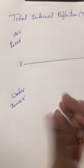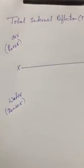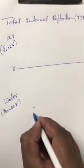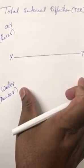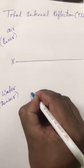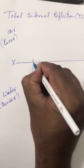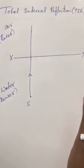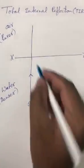In the denser medium the speed of light is less, and in the rarer medium the speed of light is more. Here we keep a source S, which is kept in the denser medium. The normal is the imaginary perpendicular line drawn on the surface to understand the incident light ray, refracted light ray, or reflected light ray.